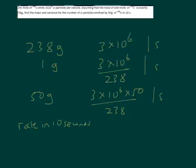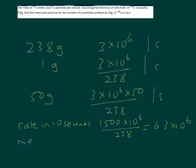So that's 1500 times 10 to the 6 over 238, and that works out to be 6.3 times 10 to the 6. So the mean is that number because it's the rate, and the variance is also that number.